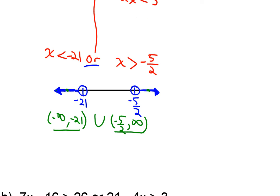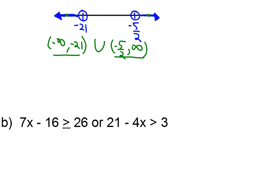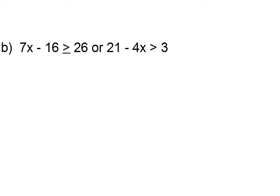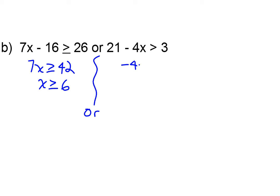Let's do another example. I've got 7x minus 16 is greater than or equal to 26, or 21 minus 4x is greater than 3. Solving the first one, I get 7x is greater than or equal to 42, so x is greater than or equal to 6. On the other hand, I get negative 4x is greater than negative 18, so x is less than 9 halves.